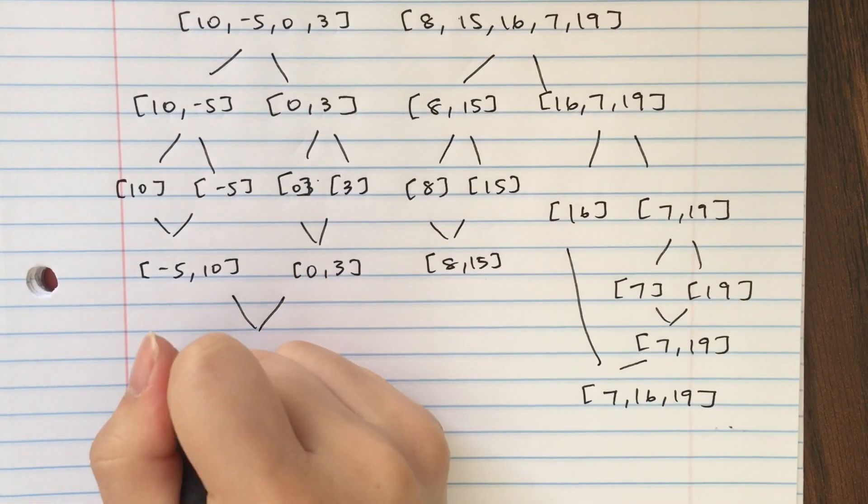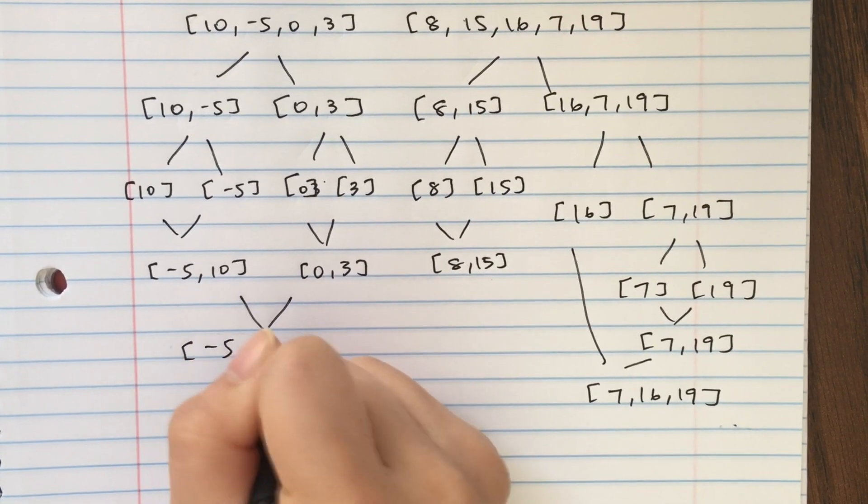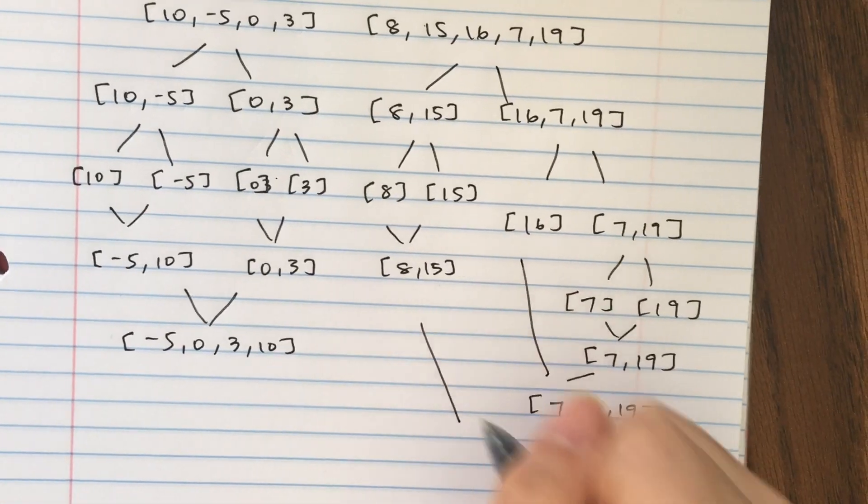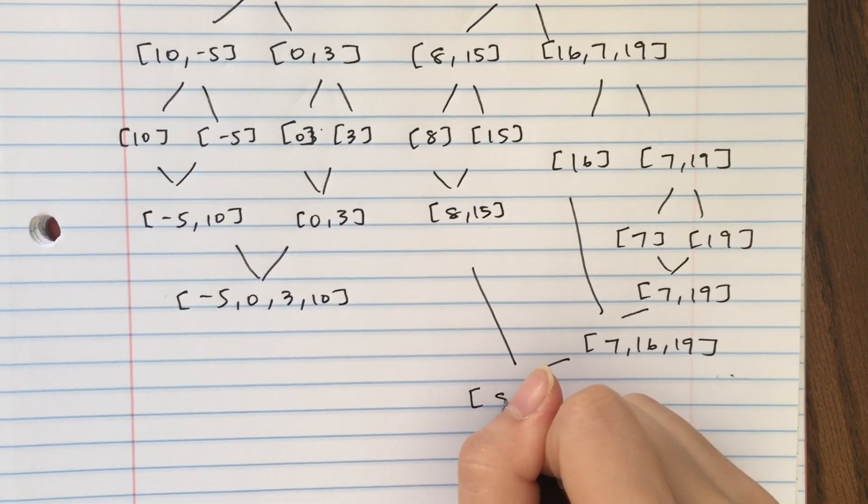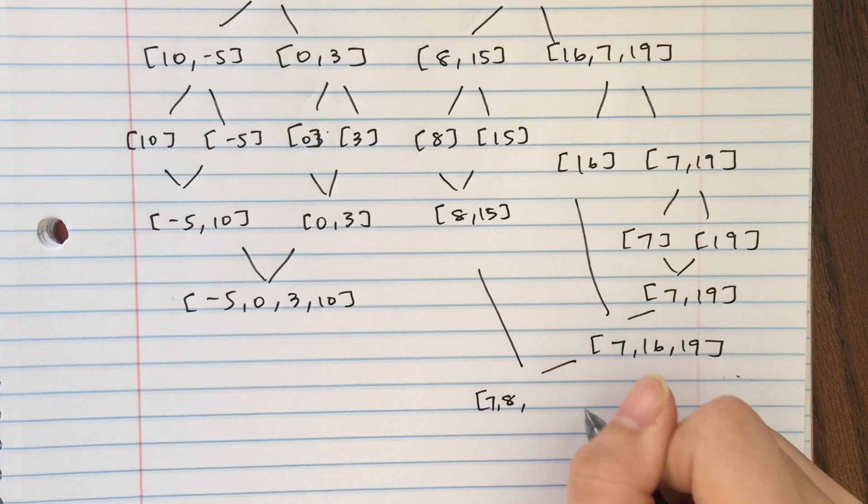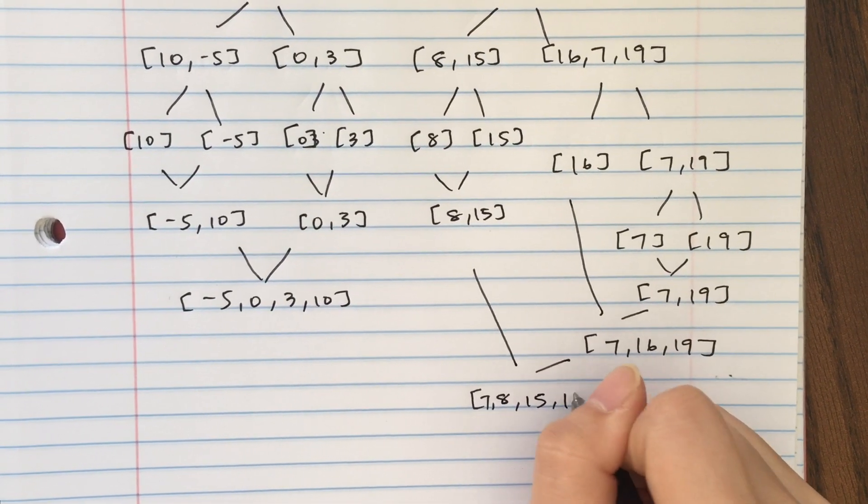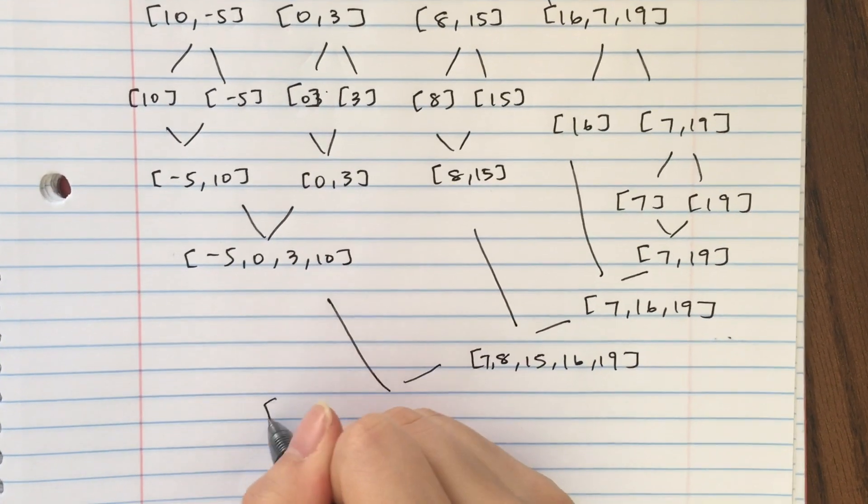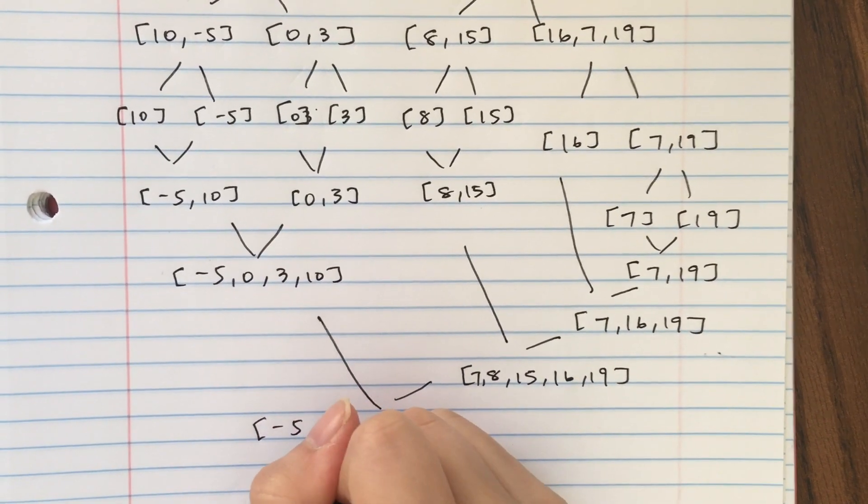So now we can go ahead and merge this. And then these two. 7, 15. And now we can merge to our final list that is going to be sorted.